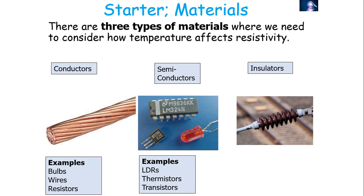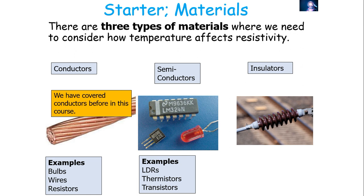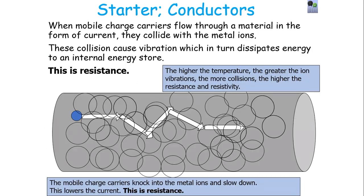There are three types of materials we need to consider when looking at how temperature impacts on resistivity. We've got conductors, such as bulbs, wires, and resistors. We've got semiconductors, such as LDRs, thermistors, and transistors. And we've also got insulators. We've covered conductors before in this particular course, when we were looking at the idea of resistance.